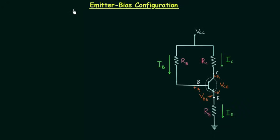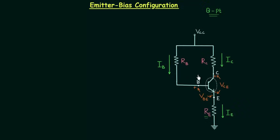In the last two lectures we completed fixed bias configuration. The next type is emitter bias configuration. The only difference between emitter bias and fixed bias configuration is resistance RE. We introduce emitter resistance to improve the stability of the operating point. I will explain how stability is improved in this configuration as compared to the fixed bias configuration.